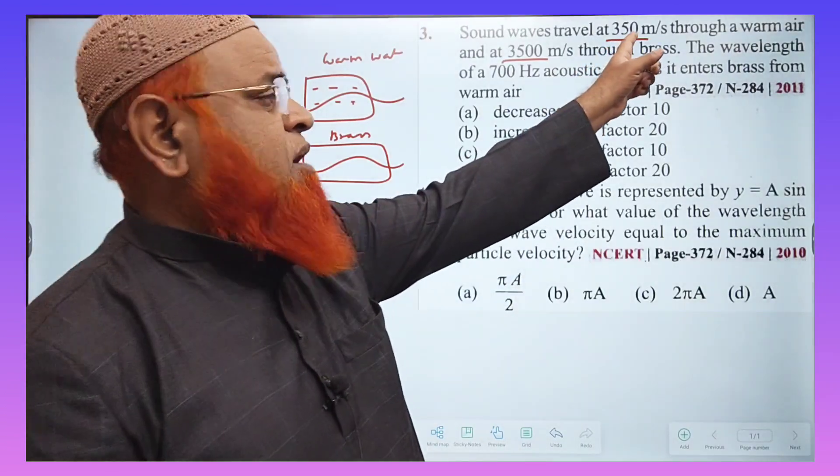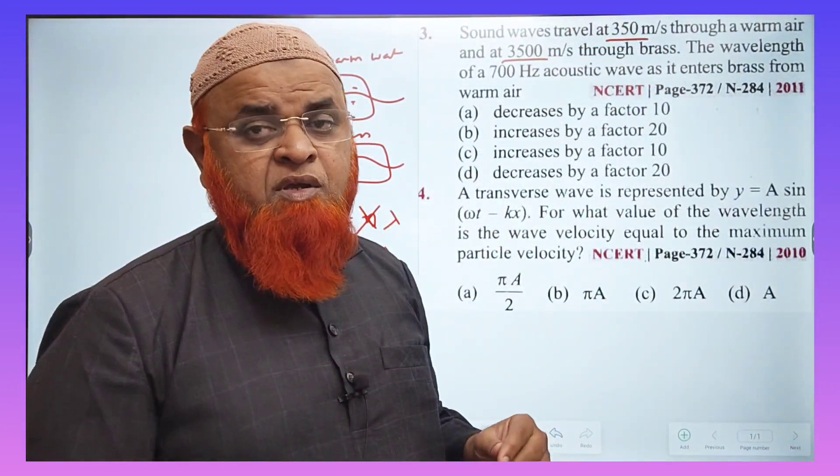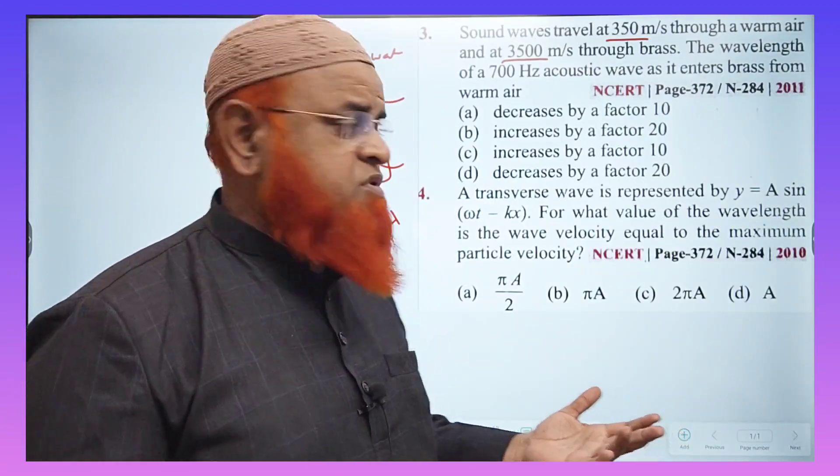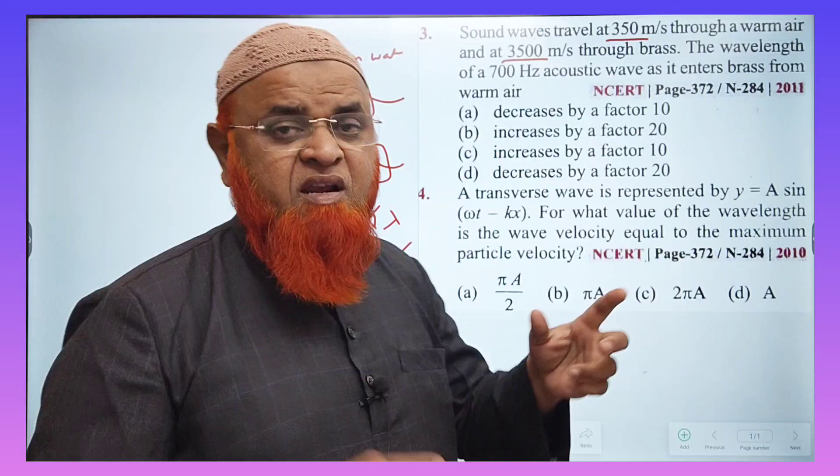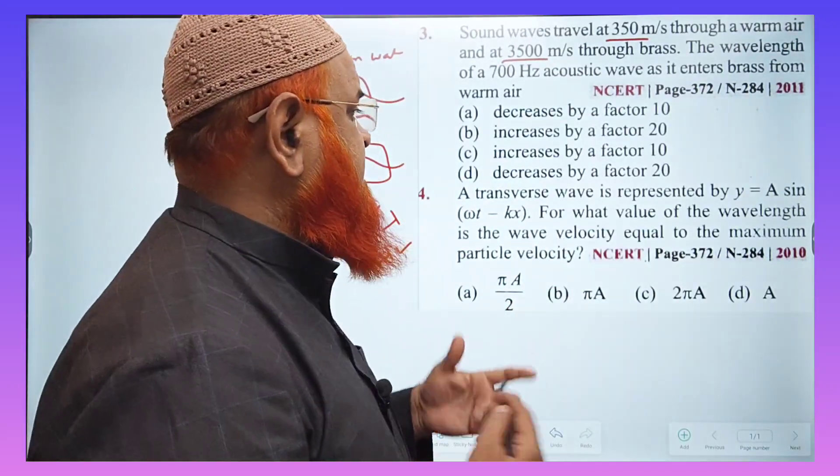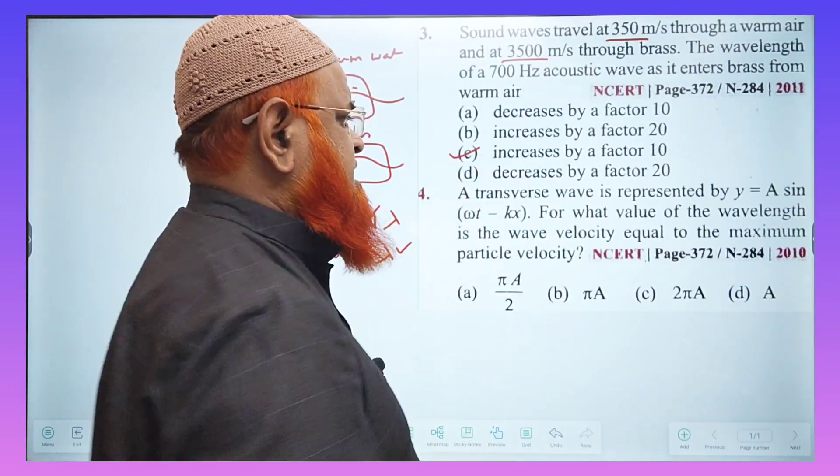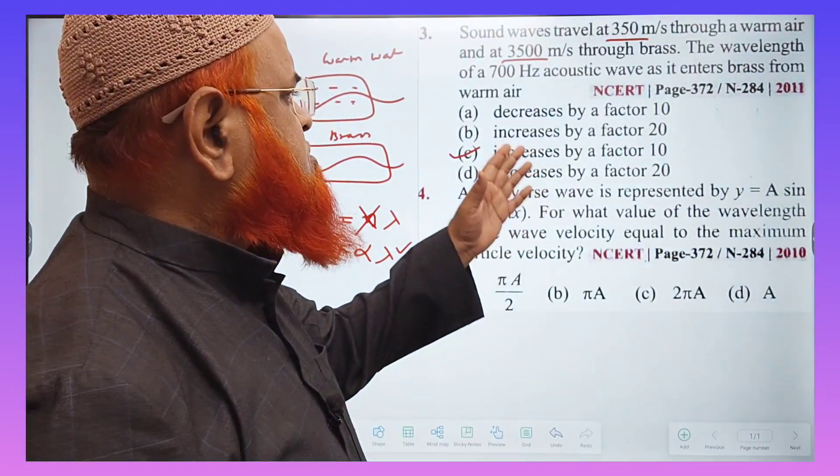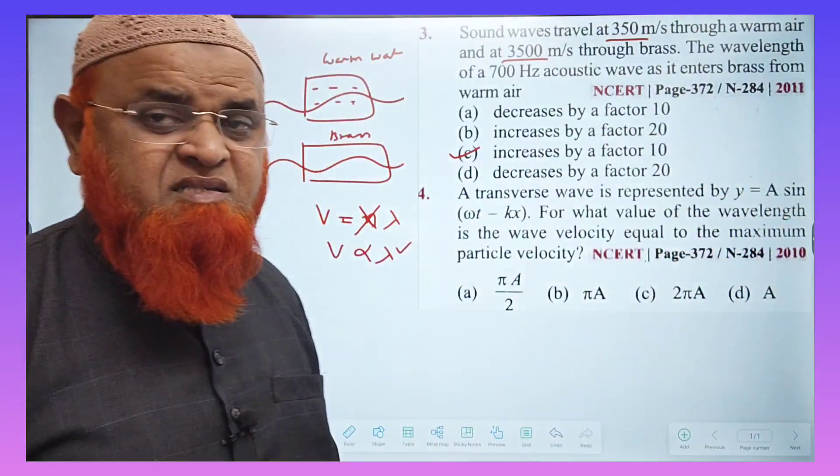And if you observe here, velocity increases by 10 times. As it is a direct relation, we can write even wavelength also increases by 10 times. So C option is the correct answer. Because it is directly related.